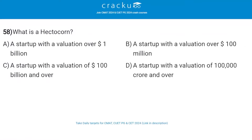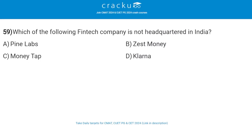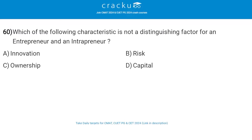What is a Hectocon? A Hectocon is a startup with a valuation of 100 billion dollars and more. Which of the following fintech companies is not headquartered in India? The answer is Klarna. Which of the following characteristic is not a distinguishing factor between an entrepreneur and a manager? The answer is innovation.